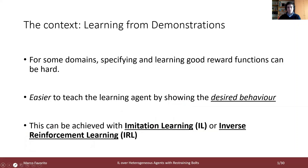The context for this work is learning from demonstrations. For complex tasks, specifying good reward functions and learning them can be hard. In those cases, it might be easier to teach the learning agent by showing him the desired behaviour. Usually, the techniques used to achieve this kind of learning are imitation learning and inverse reinforcement learning.